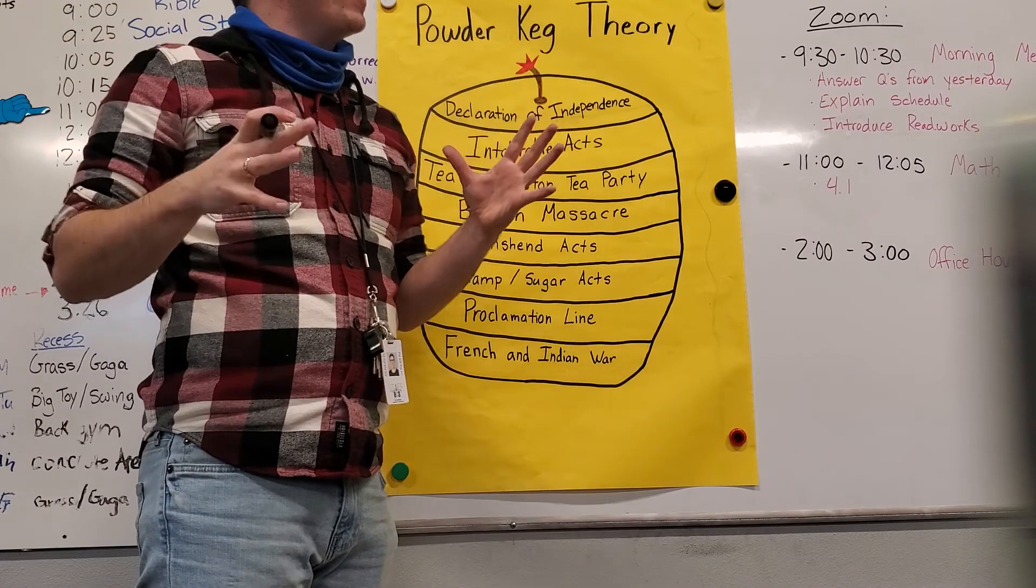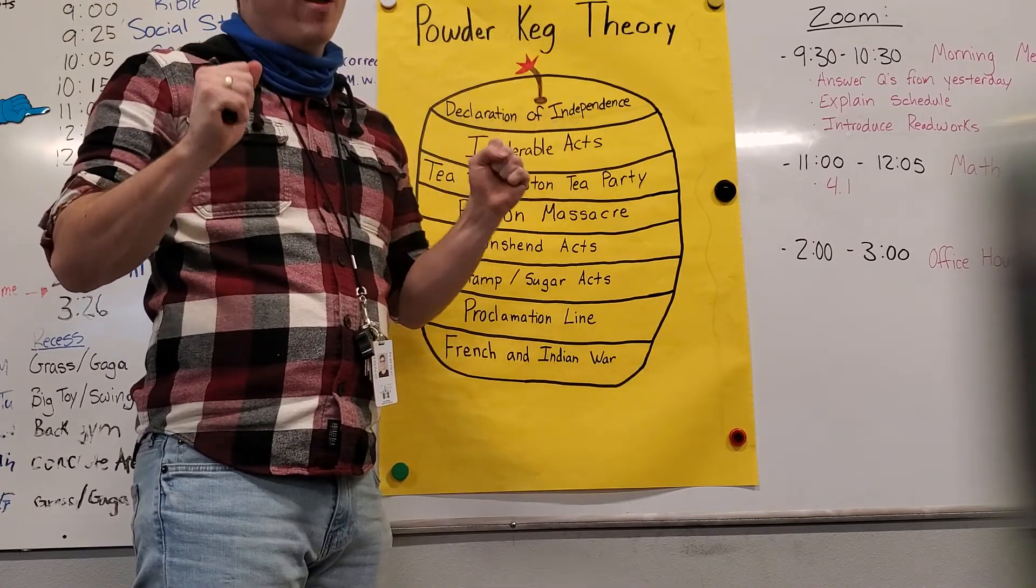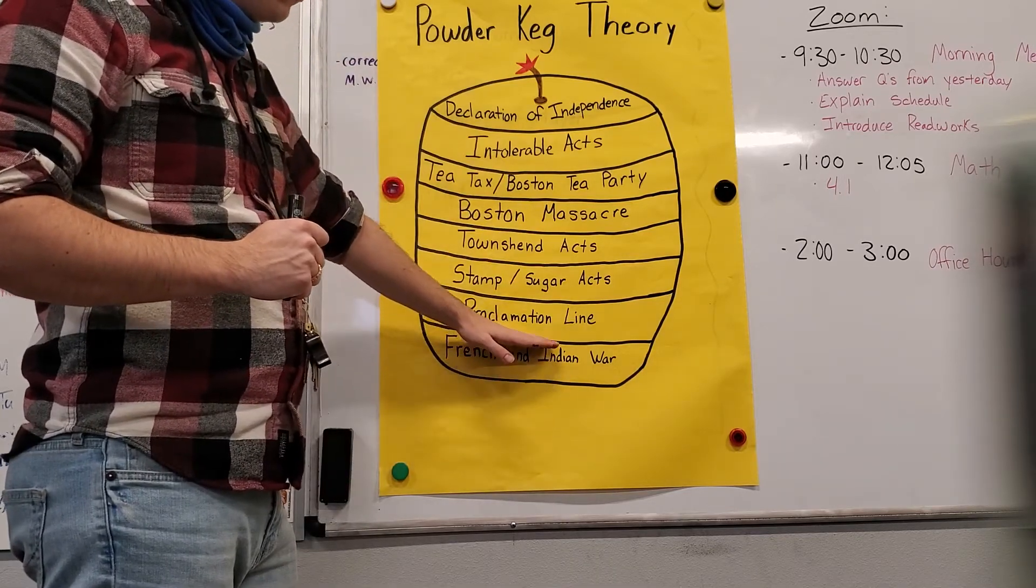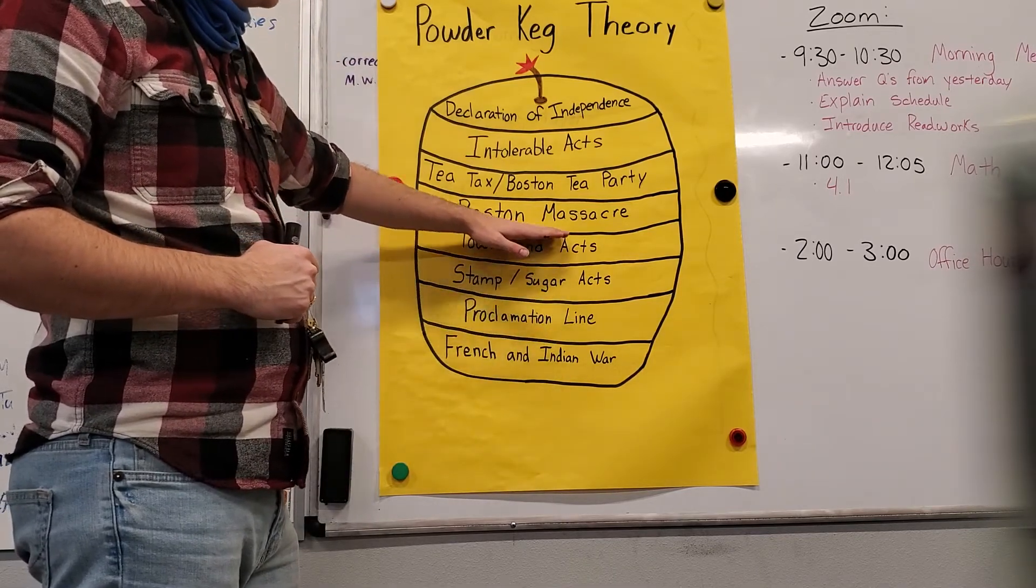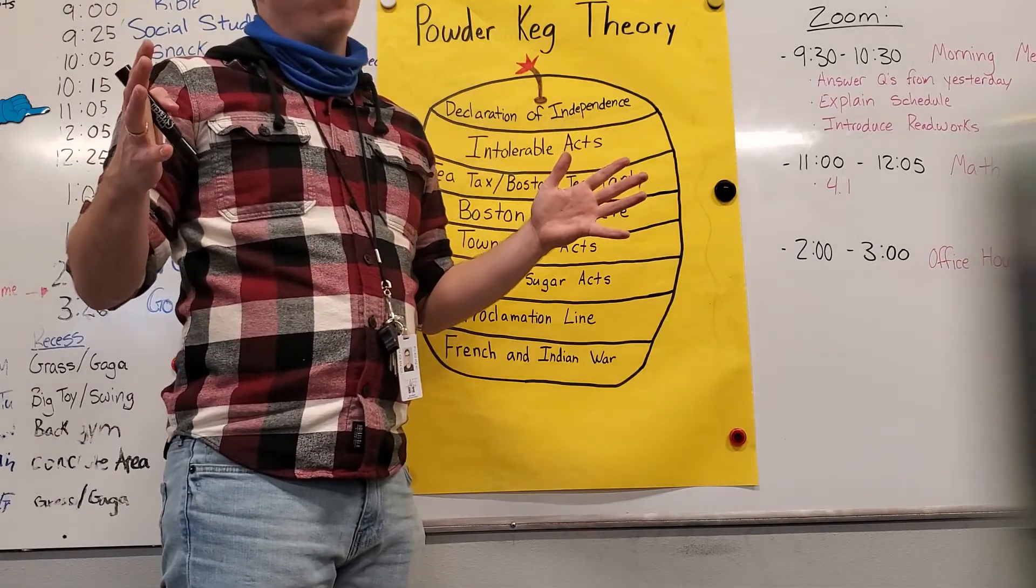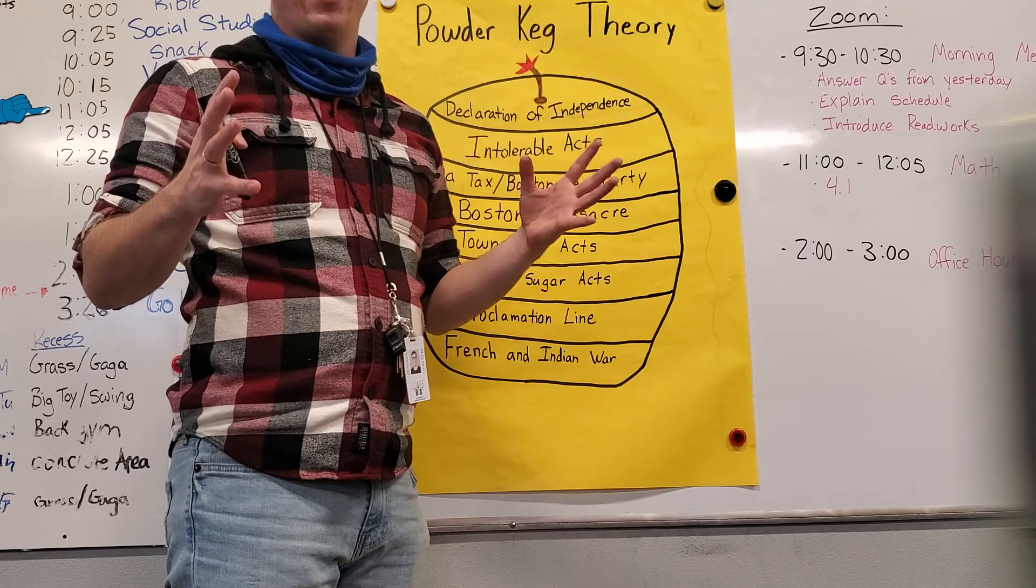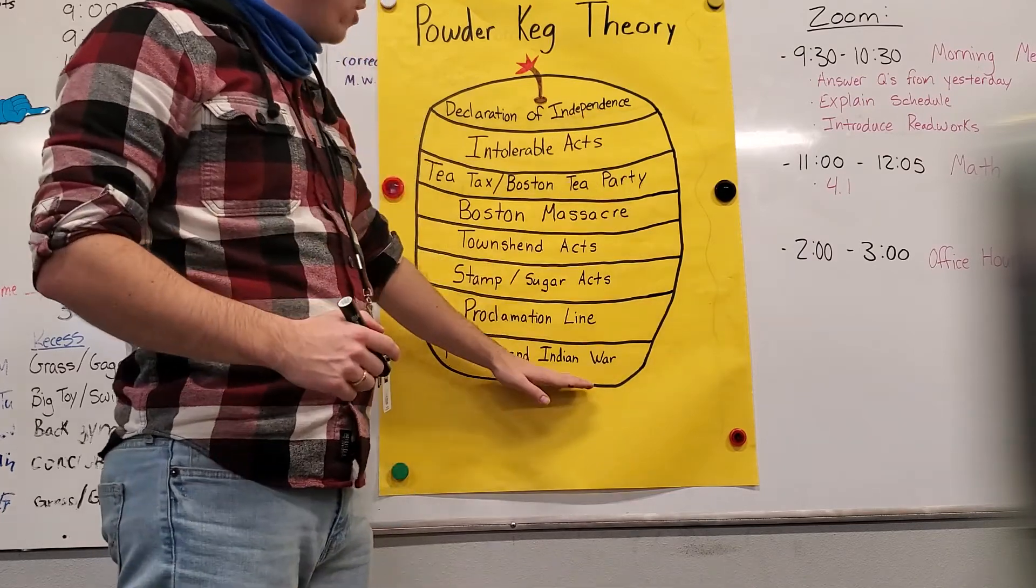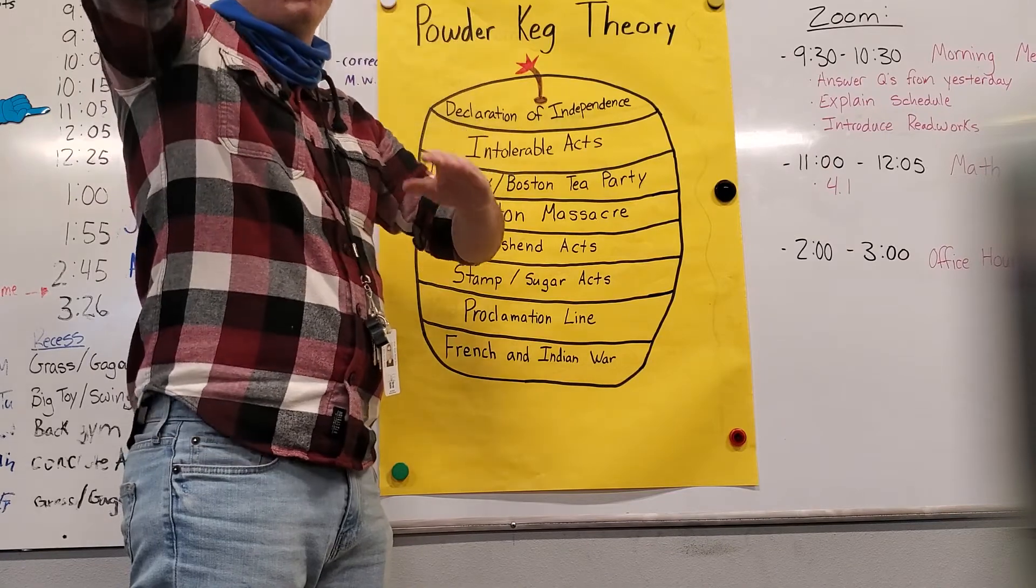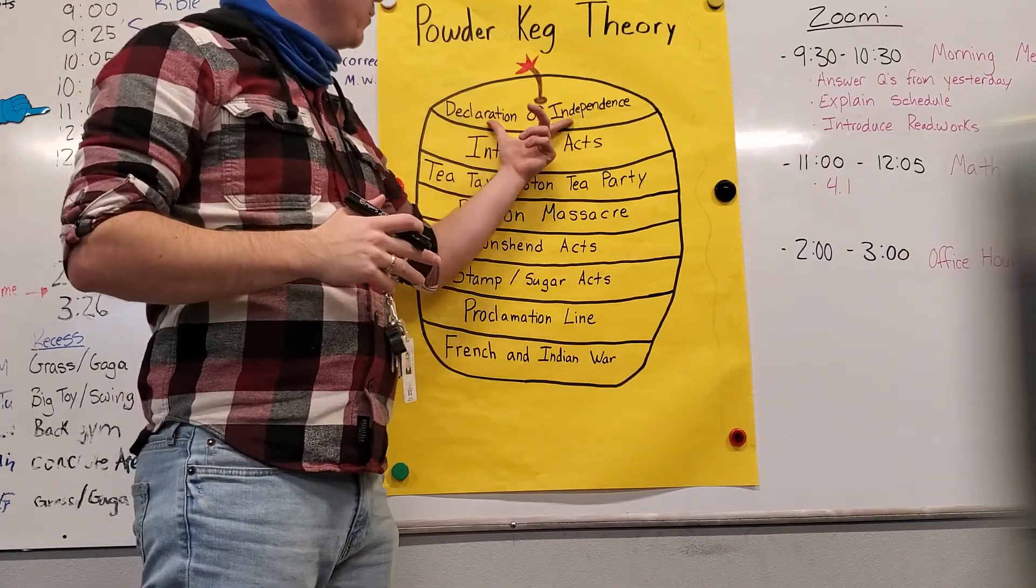And over the past month and a half, two months, we have been learning about what that explosion was. That explosion was the cause of all of these different things. They all led to the Revolutionary War. And that is what the powder keg theory is, is that all of these things built up over time, small things, built, built, built, built, built, built. And finally, the Declaration of Independence, we are our own country.